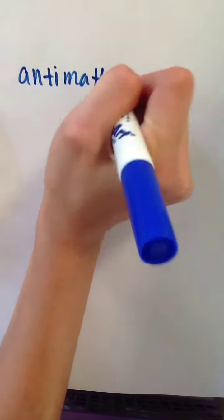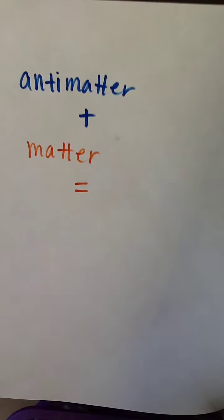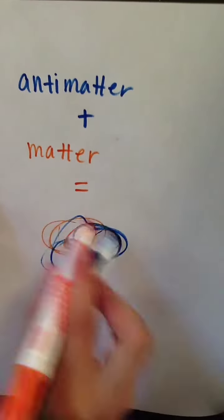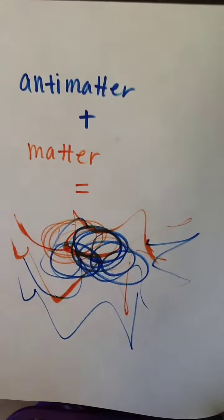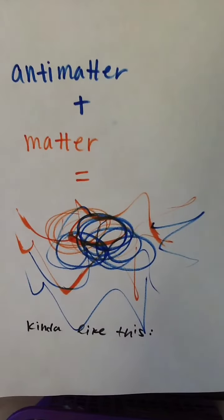And you can ignore the stuff at the bottom, I messed up. But the interesting thing is, is that when antimatter comes in contact with matter, they pretty much implode. Just like how the colors orange and blue don't go well with each other, or do they? I don't know. Antimatter and matter are incompatible, which is why antimatter is so expensive and difficult to create and maintain.